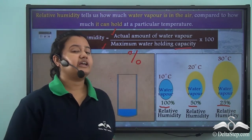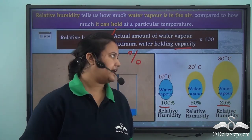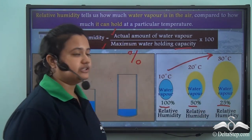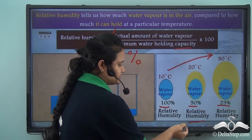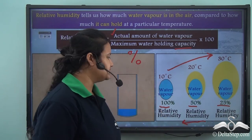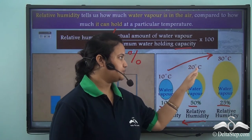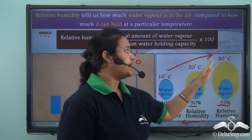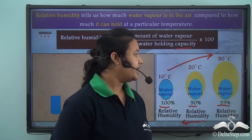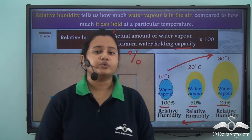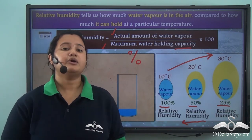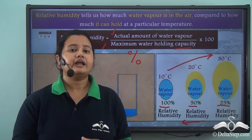As temperature increases, relative humidity falls. At 10°C relative humidity is 100%, at 20°C it is 50%, and at 30°C it is only 25%. So relative humidity is inversely proportional to air temperature.